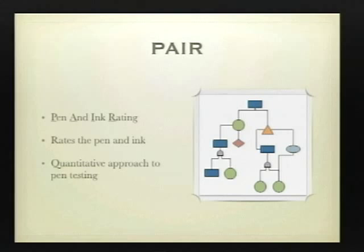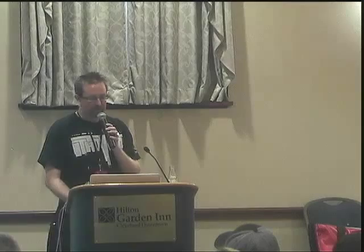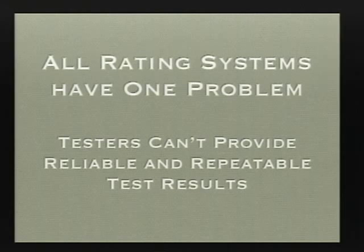PEAR takes more of a qualitative approach — you have a nice flowchart where you can flow down through different characteristics and qualitatively measure the results. Those are kind of two competing standards. But really, all pen rating systems have one problem: the tester cannot provide reliable and repeatable results. Because of this, we can't get to the point where we're debating a pen rating system because we can't provide reliable data into those systems. So it's key that we come up with a standard system here.